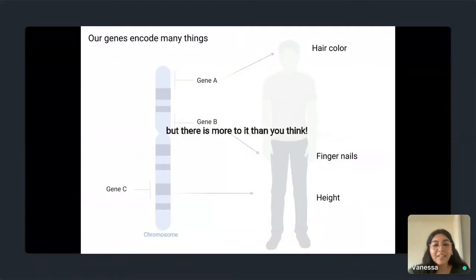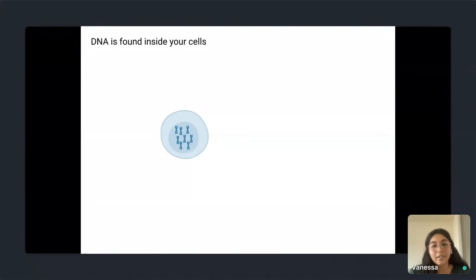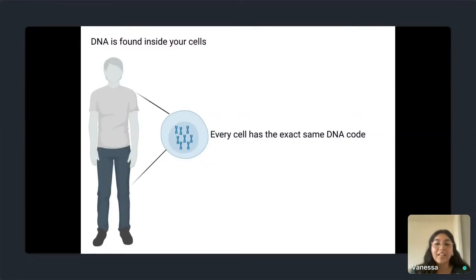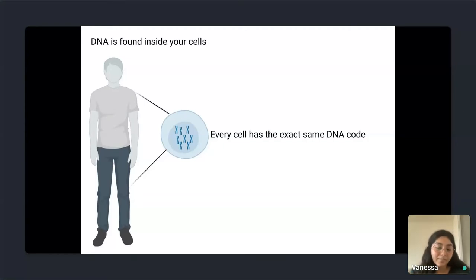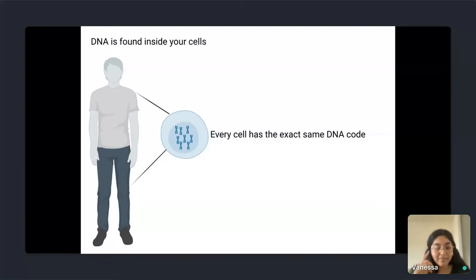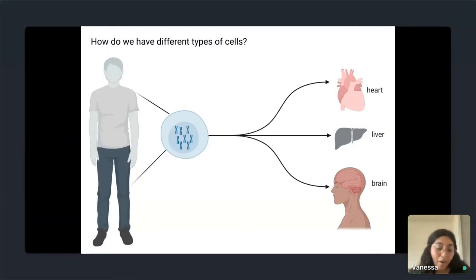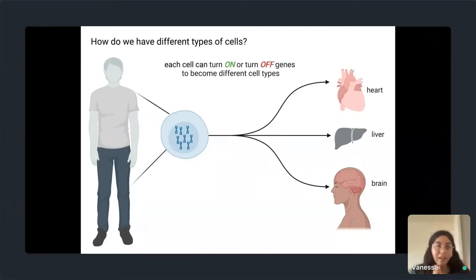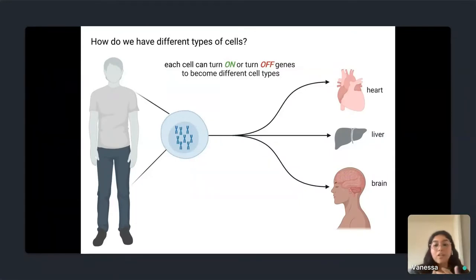As a reminder, DNA is found inside your cells, and our whole body is composed of cells. Every cell of your body contains the exact same DNA code. If that is true, then how do we have different cells — especially the different cells that make up our organs, such as our liver, heart, and brain? One answer is that each cell can turn on or turn off specific genes to become different cell types with different functions.